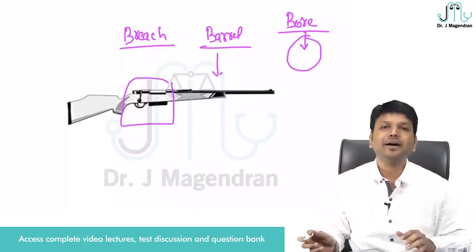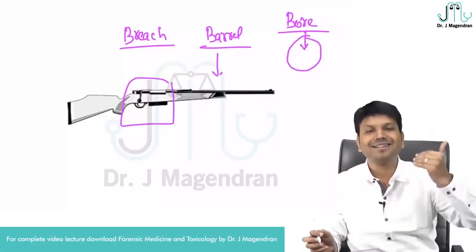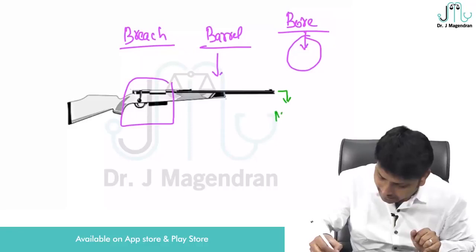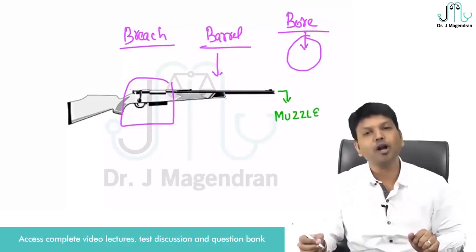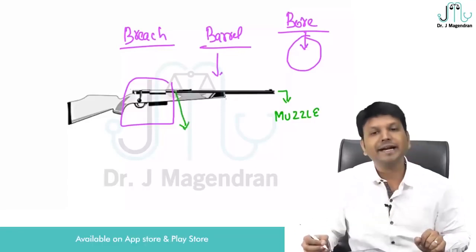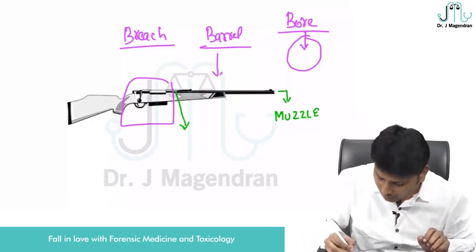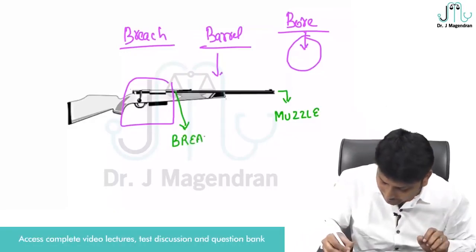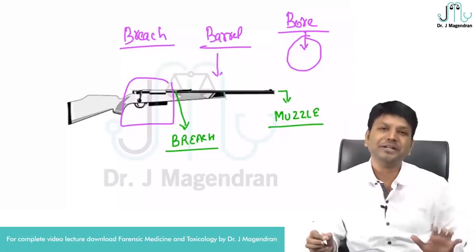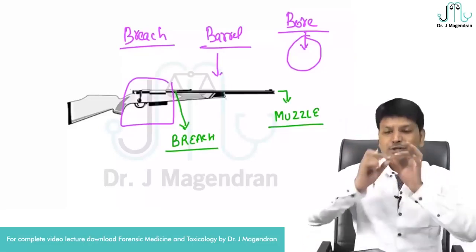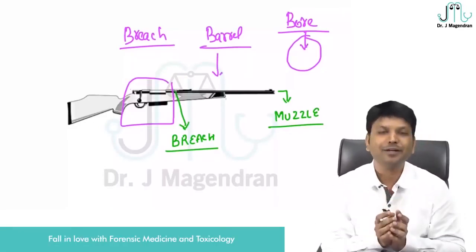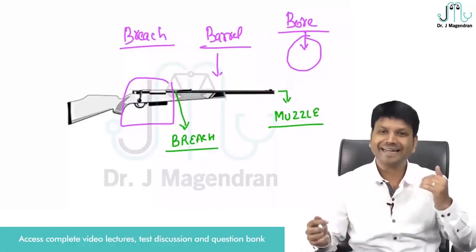If you take the barrel, it has two different ends. The outer end of the barrel is called the muzzle end. The inner end of the barrel, where it connects with the breech, is called the breech end. So: the inner diameter of the metal tube is called the bore, the outer end is the muzzle end, and the inner end is the breech end.